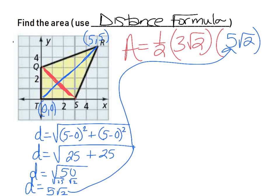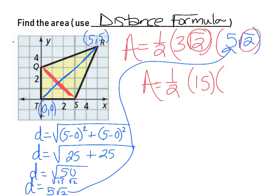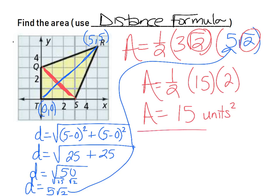Now apply the kite area formula: one-half times 3√2 times 5√2. Multiply like parts: 3 times 5 is 15, and √2 times √2 is 2. So one-half times 15 times 2 equals 15 square units. Even with radicals it came out clean. Don't forget these previous strategies — Pythagorean theorem, special right triangles, and distance formula — when working through the homework.